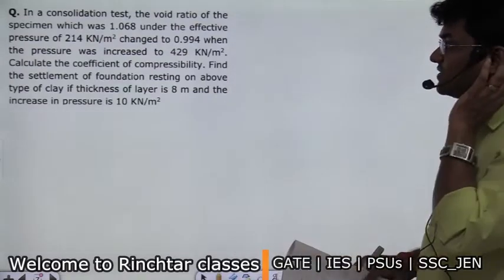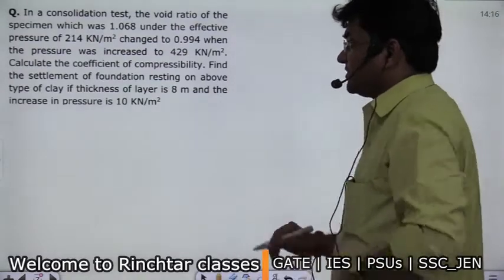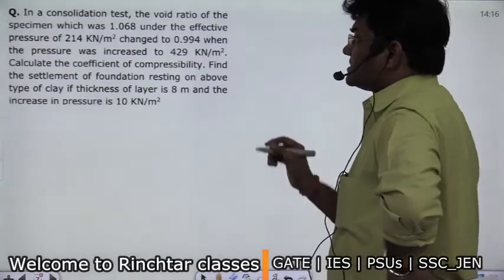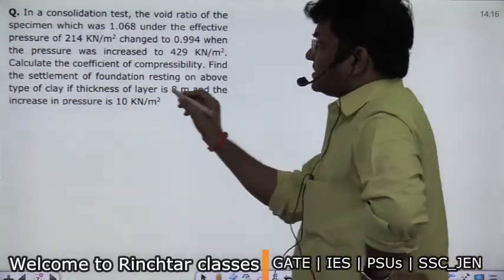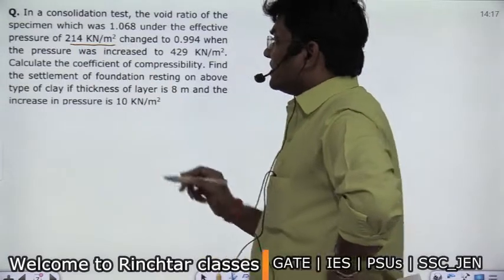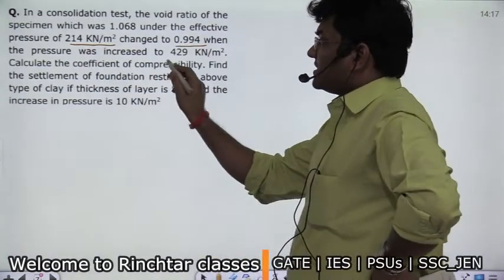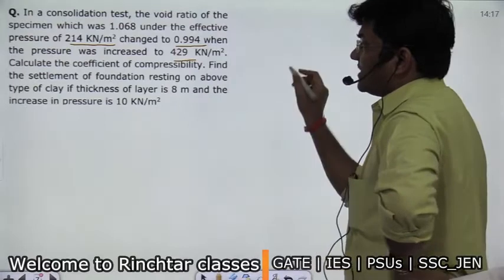The void ratio of the specimen which was 1.068. The effective pressure of 214 kilonewton per meter square. Now when the pressure was increased to 429, the void ratio is changing.